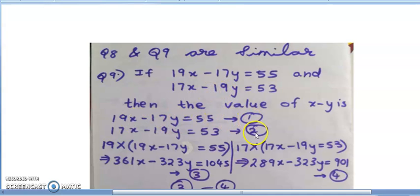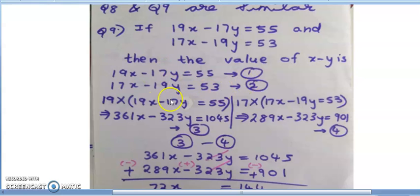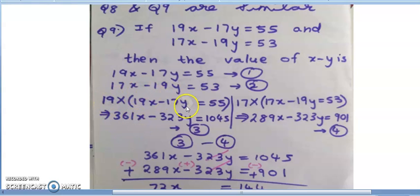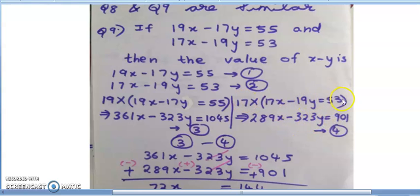This is the first equation and this is the second equation. Multiplying the first equation by 19: 19×19x - 17y = 55 gives 361x - 323y = 1045. Multiplying the second equation by 17: 17×17x - 19y = 53 gives 289x - 323y = 901.